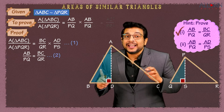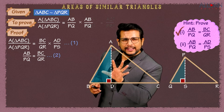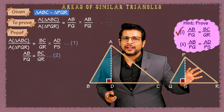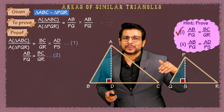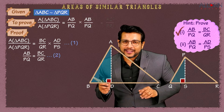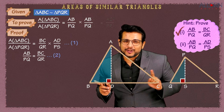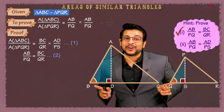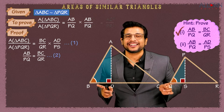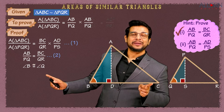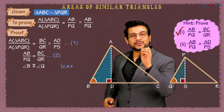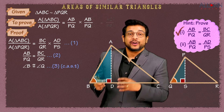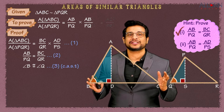Since triangle ABC ~ triangle PQR, we can say angle B is congruent to angle Q. This is Result 3, and the reason is CAST — corresponding angles of similar triangles. Now we can prove triangles ABD and PQS to be similar by the AA test of similarity.